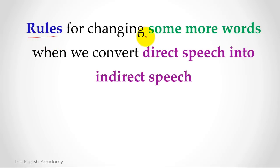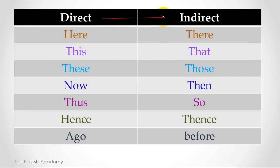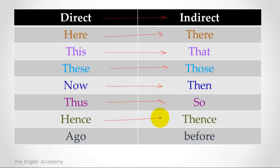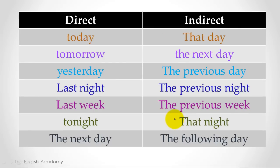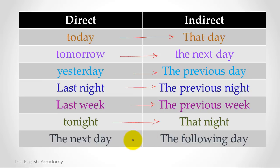Here are some important word changes when converting direct to indirect speech. Here becomes there. This becomes that. These becomes those. Now becomes then. Thus becomes so. Hence becomes then. Ago becomes before. Today becomes that day. Tomorrow becomes the next day. Yesterday becomes the previous day. Last night becomes the previous night. Last week becomes the previous week. Tonight becomes that night. And 'the next day' becomes 'the following day.'